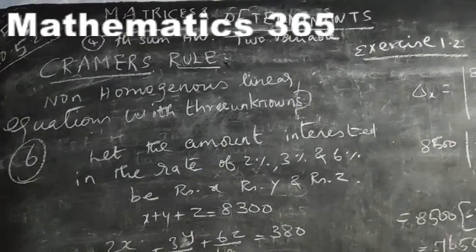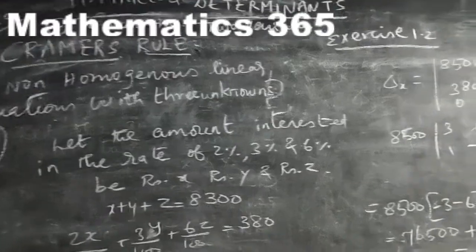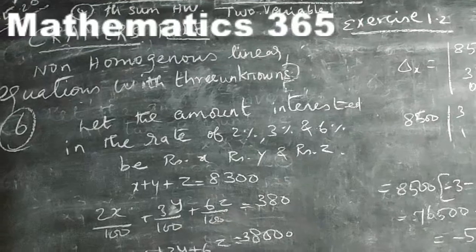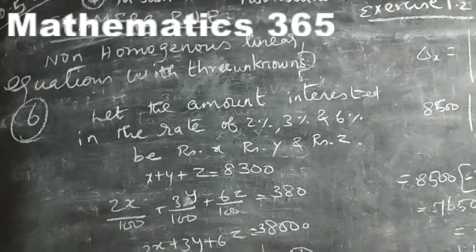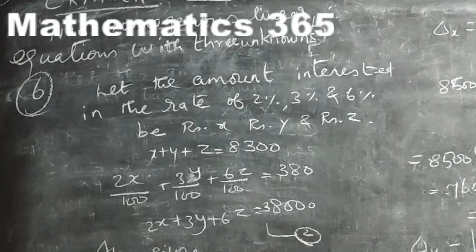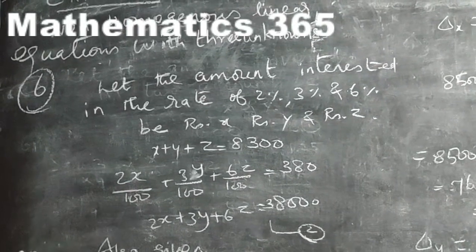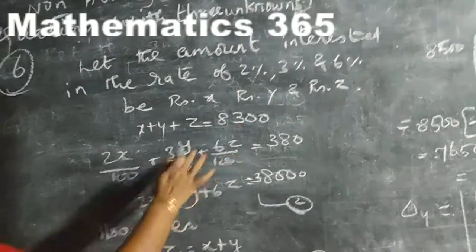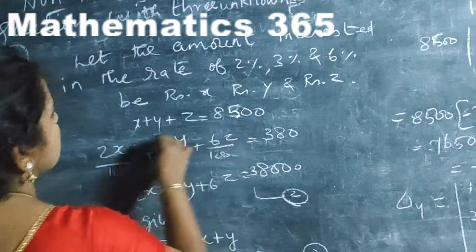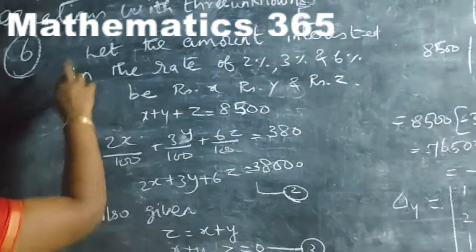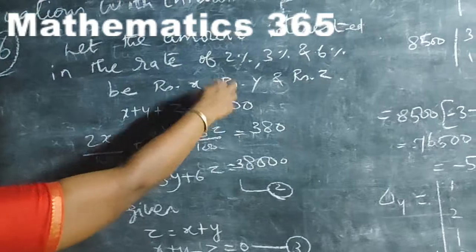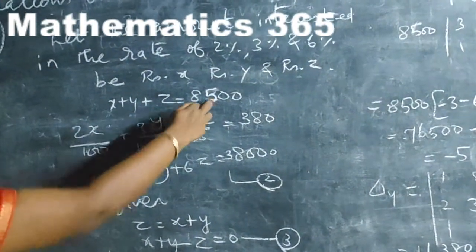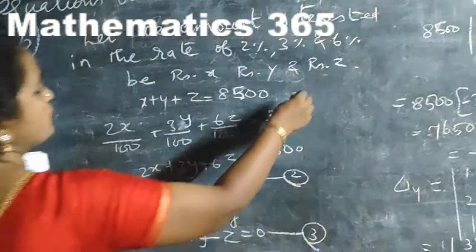The 4th sum uses 3 variables. Total rupees 8,500 was invested in 3 interest-earning accounts. The first amount is x, the second amount is y, and the third amount is z. So x plus y plus z equal to 8,500. This is the first equation.